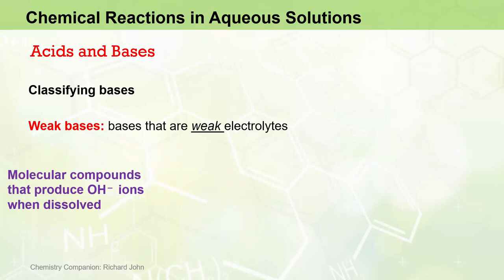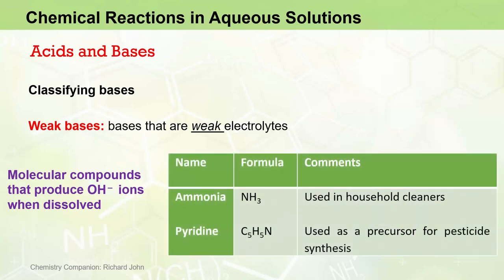And so weak bases will typically be molecular in nature, and most happen to be organic in nature, meaning they contain carbon-hydrogen bonds in their structure. Examples include pyridine C5H5N, which is used in a variety of synthetic processes, including as a precursor to pesticide synthesis. Ammonia, on the other hand, is an inorganic weak base used in household cleaning products.